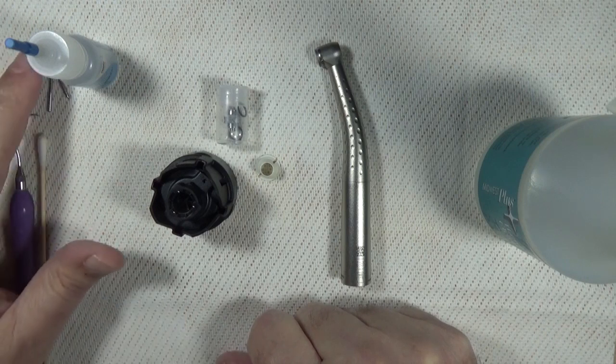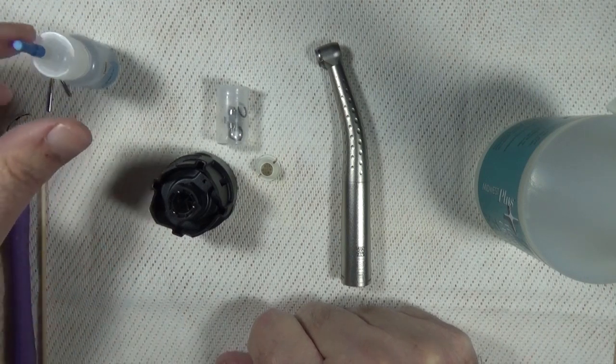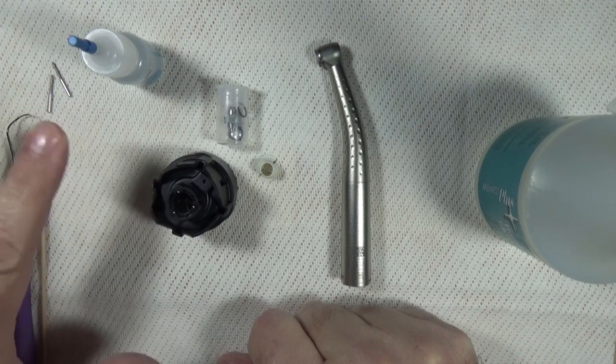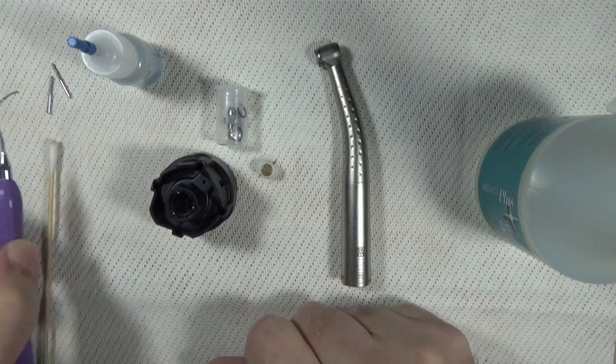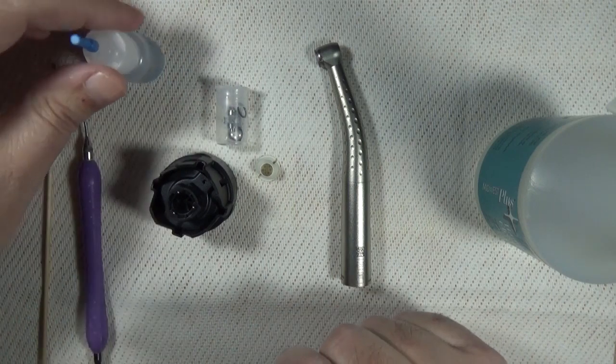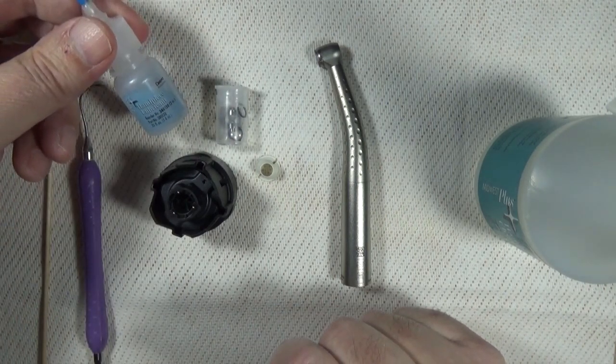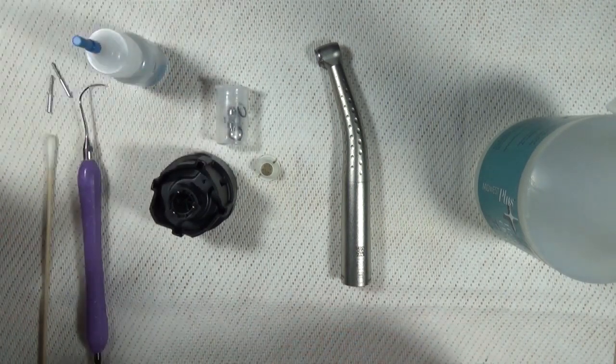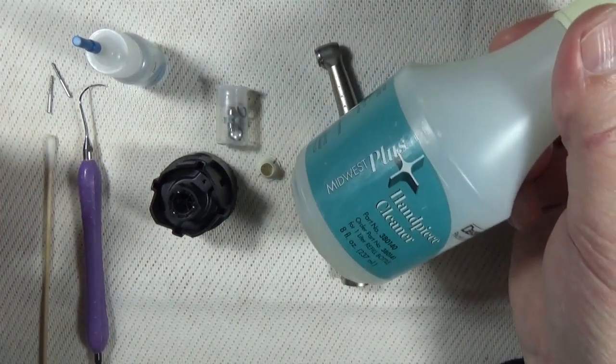The other things I have here are a couple burrs we're just going to put in to aid in the removal and installation of the turbine, an explorer tool, some cotton swabs, the Midwest handpiece lubricant, and the Midwest handpiece cleaner.